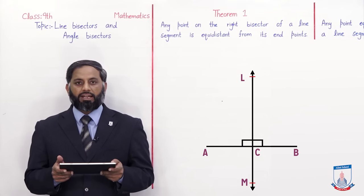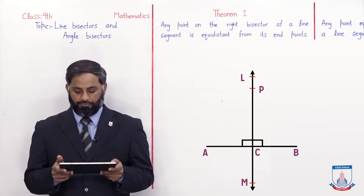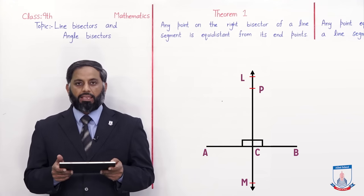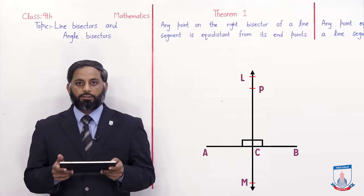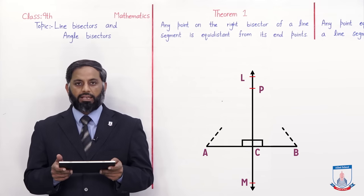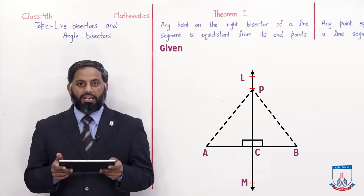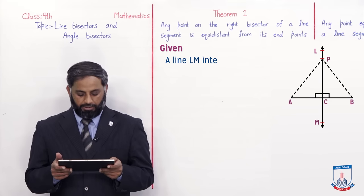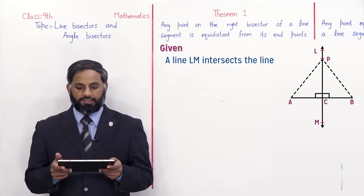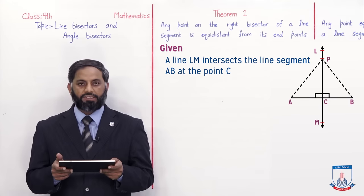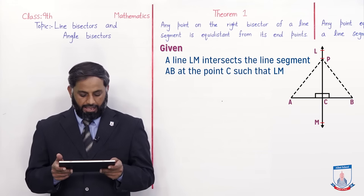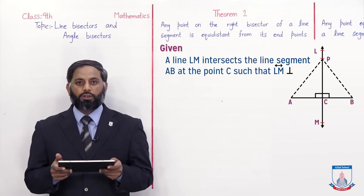Now we take any one point P on this right bisector. We have to prove that point P is at equal distance from the end points A and B of line segment AB. In construction, we will join P to end points A and B to complete our figure. In Given: a line LM intersects the line segment AB at point C such that LM is perpendicular to AB.